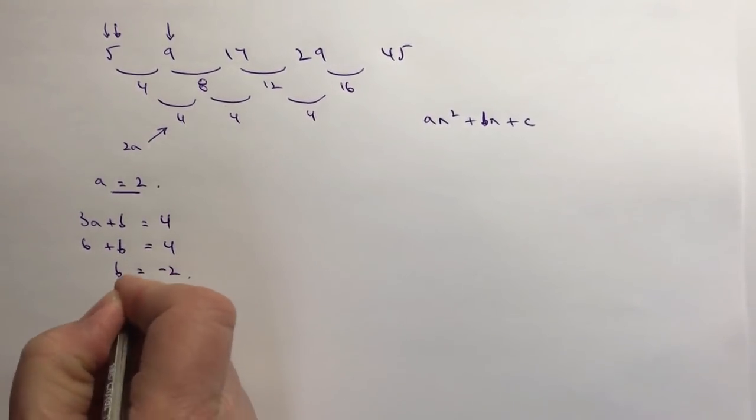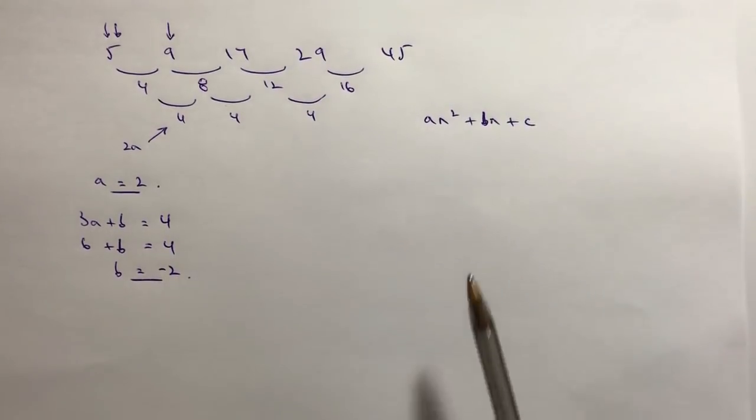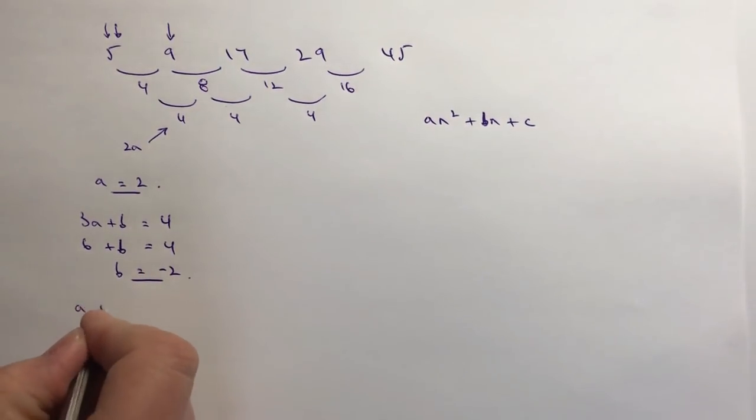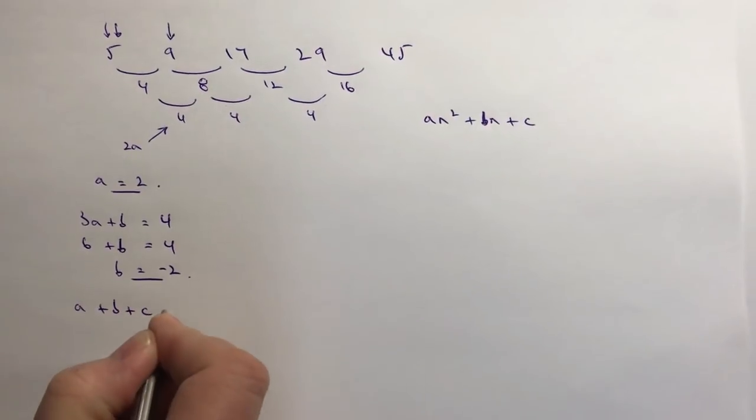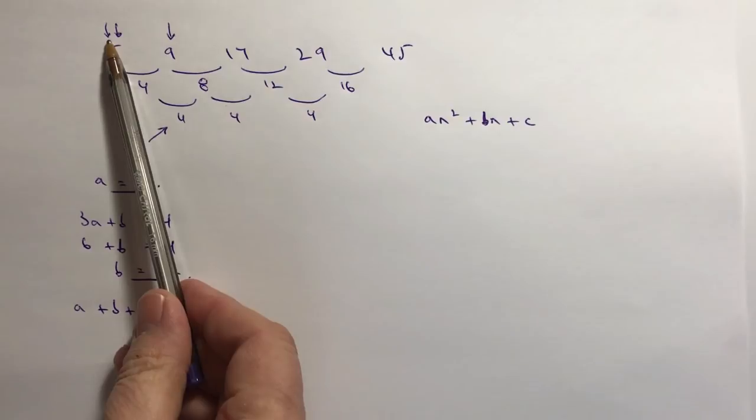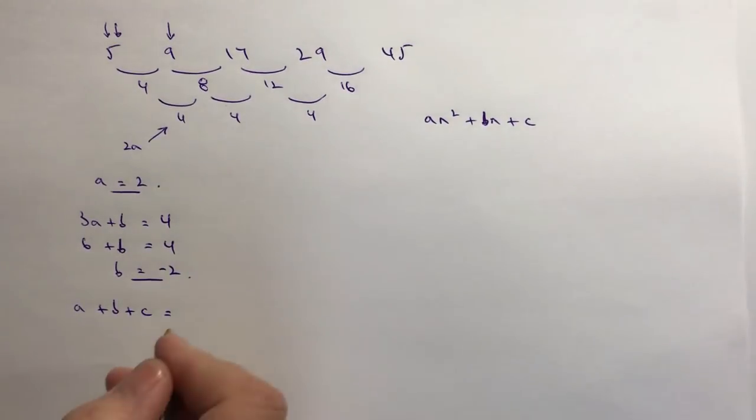If I then take 6 away from both sides I've now got my value of b which is going to be -2. So that's actually my second value that goes here. And then the final little bit is you need to remember this as a + b + c equals, in this particular case, the first number, which is why I've put the two arrows there. So the first number is 5.